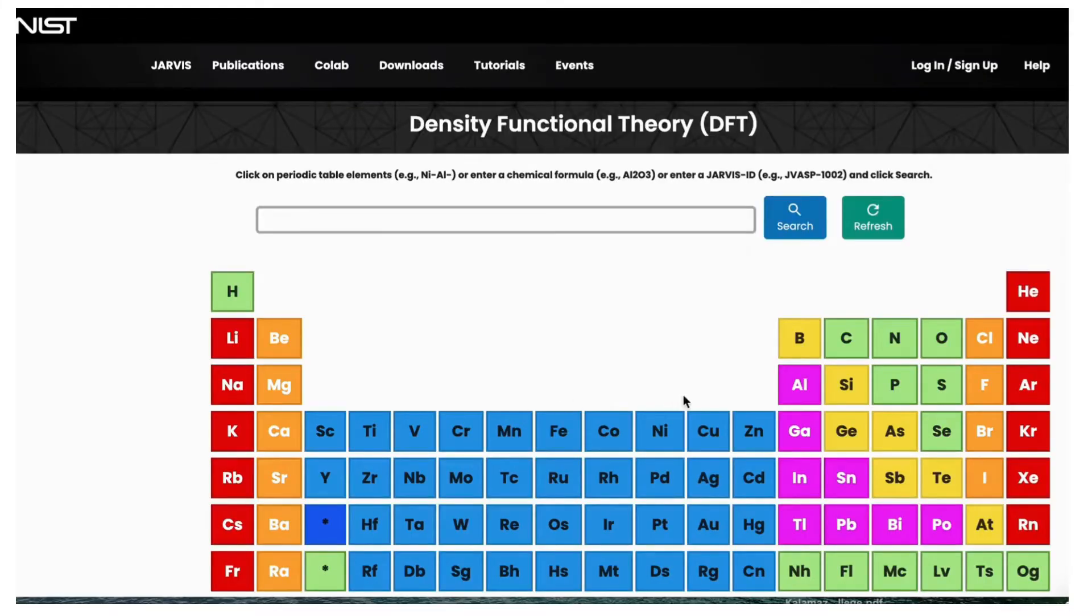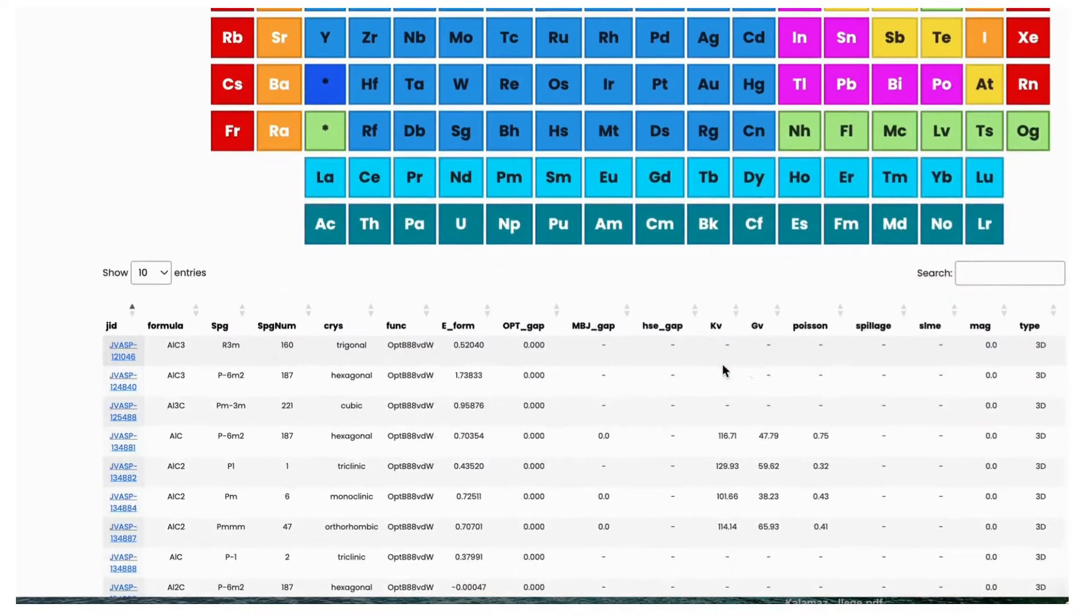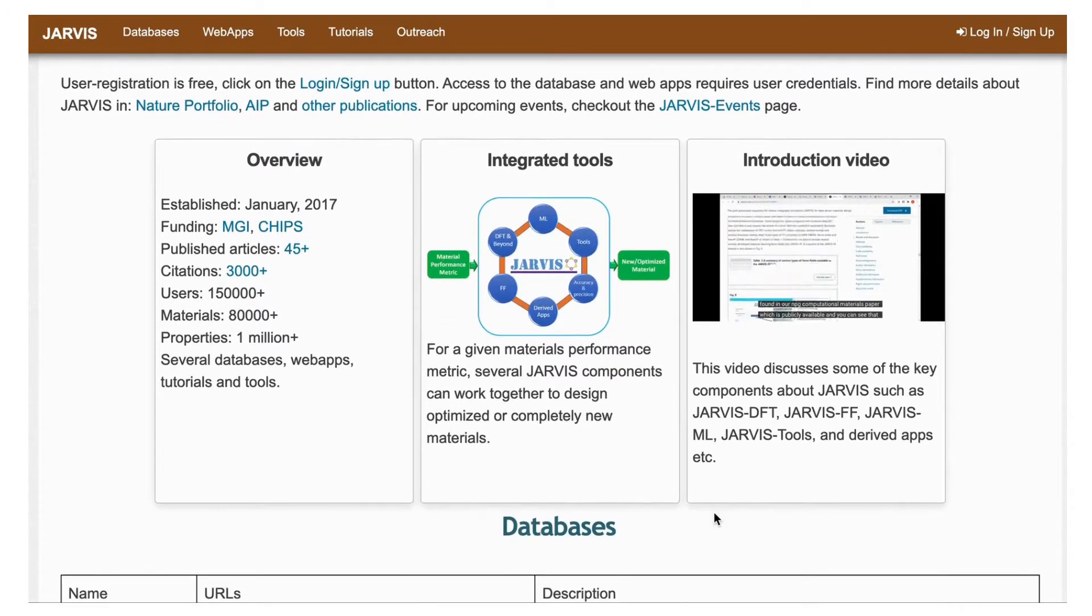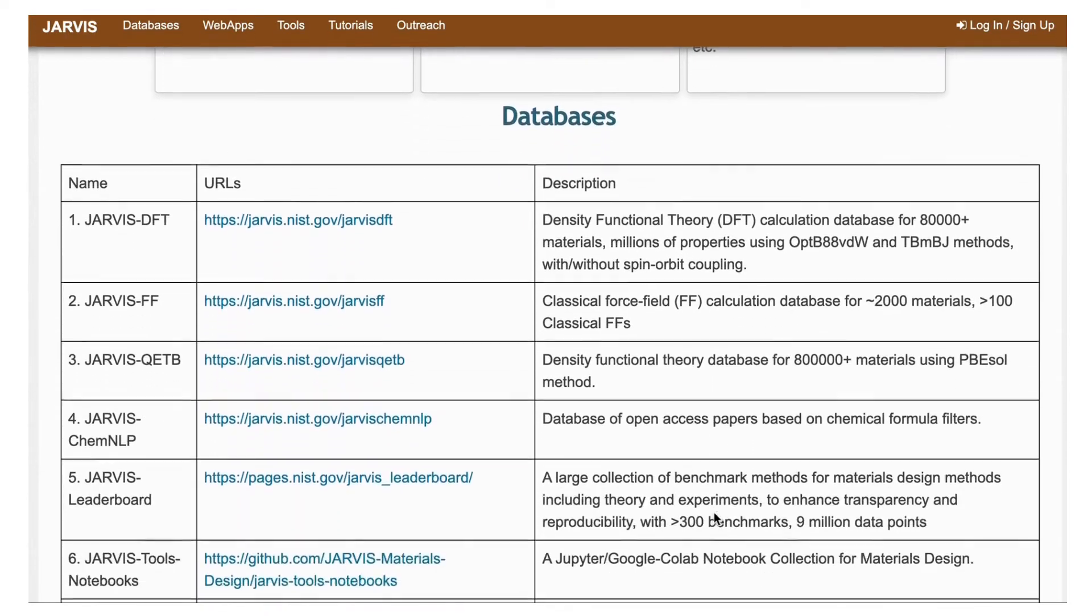You can access cutting-edge tools like AtomGPT, an AI model for predicting material properties at the atomic level, and Inverse Material Design, which helps researchers design new materials based on desired properties using machine learning and quantum computing.